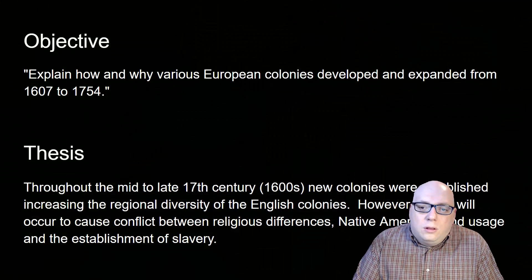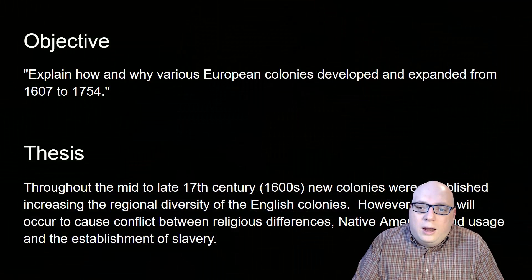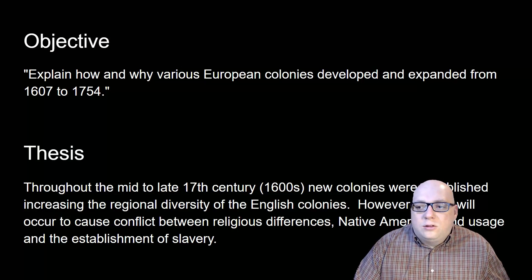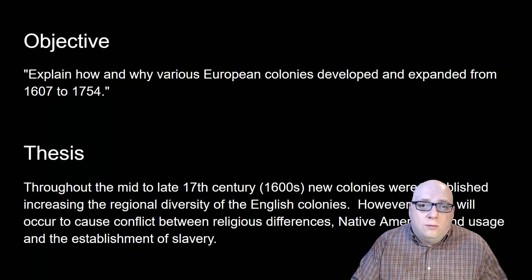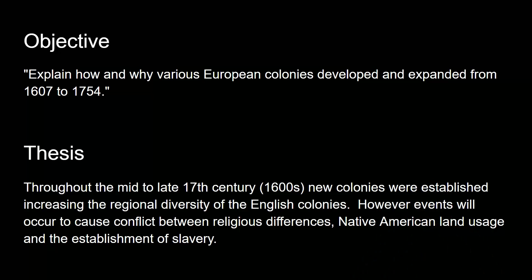The objective is to explain how and why various European colonies developed and expanded from 1607 to 1754. The argument I'm going to use to elaborate upon that objective is: throughout the mid to late 17th century, new colonies were established, increasing the regional diversity of the English colonies. However, events will occur to cause conflict between religious differences, Native American land usage, and the establishment of slavery.